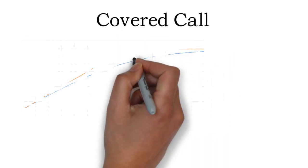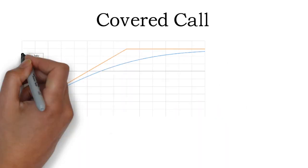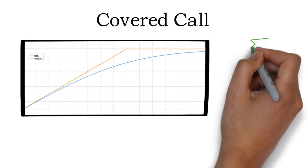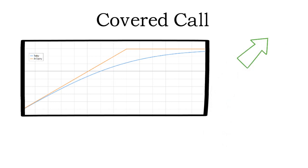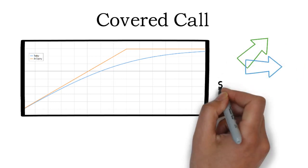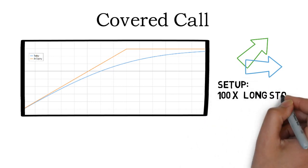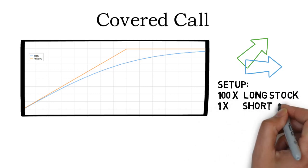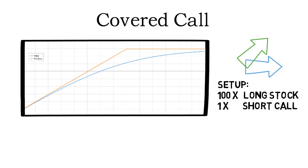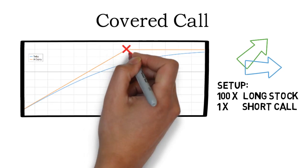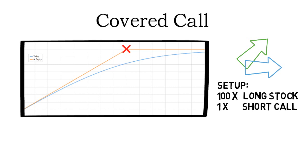Let me start by presenting the payoff diagram of a covered call. As you can see on this payoff diagram, a covered call is a slightly bullish to neutral trading strategy. To set up a covered call strategy, you need to buy 100 shares of the underlying asset stock for every call option that you sell on it. So if you sell one call option, you need to buy 100 shares of the underlying stock. The red cross is the strike price of the short call and the green cross is the underlying asset's trading price.